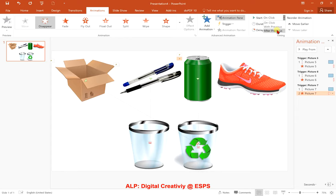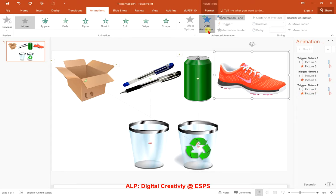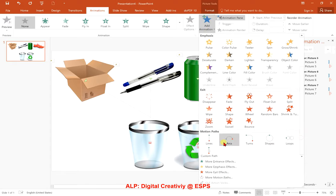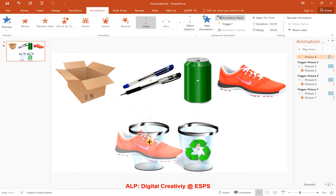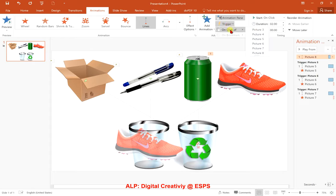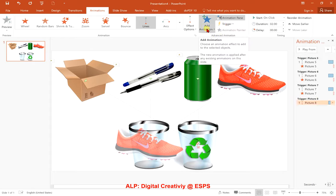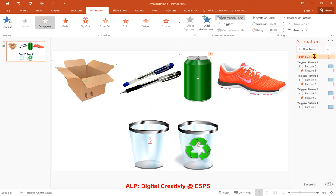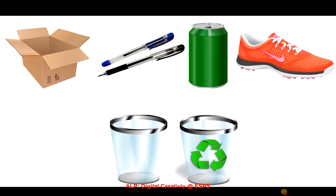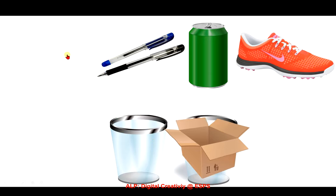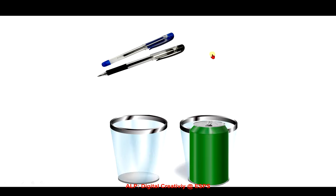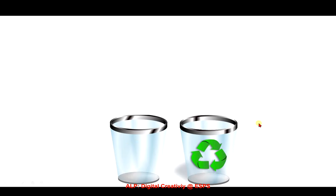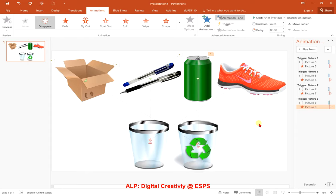The last one is the shoe. Add Animation, scroll down, and choose Lines. Bring the path to the normal trash bin. The shoe is picture eight, so set the trigger to 'On Click of Picture 8.' Add the Disappear animation so it disappears after it moves to the normal trash bin, and set it to After Previous. Now let's see if it works — click on any of the objects and it moves and disappears. There you go, the game works! If you have Microsoft PowerPoint, go try it at home. You can watch the video again and pause it at any point you want.